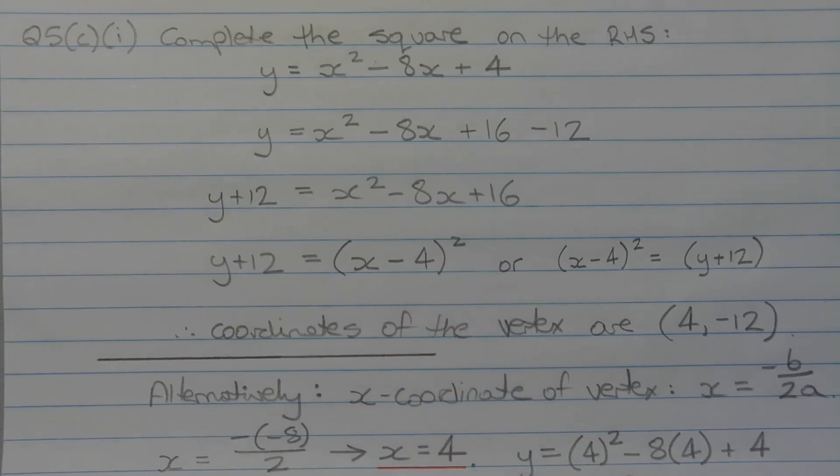Or writing it the other way around, we get x minus 4 in brackets squared is equal to y plus 12. And because the equation is in this form, in perfect square form, we can read the coordinates of the vertex directly. Therefore, the coordinates of the vertex are 4, negative 12.